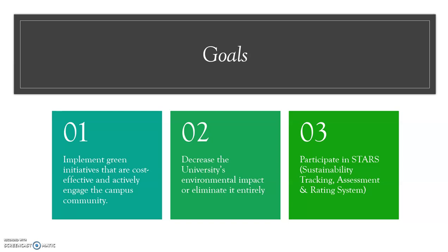Lastly, a big one everyone thinks about is recycling. In most states, recycling is mandatory by law. For the university, a single stream system is best. The Green Campus Committee will be responsible for implementing educational materials so students understand which materials are recyclable and which are not. That leads us into goal number two: to decrease the university's environmental impact or eliminate it entirely. And goal three is to participate in STARS, our Sustainability Tracking, Assessment, and Rating System.